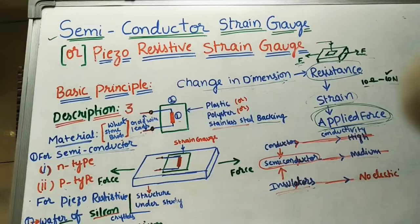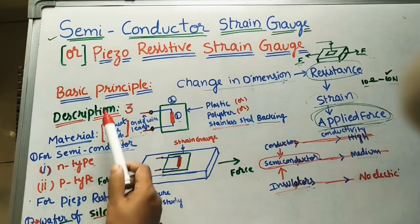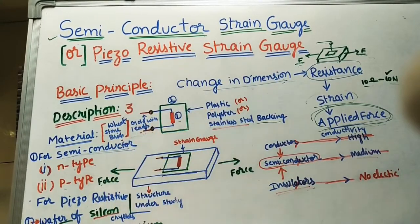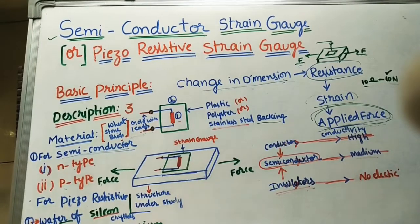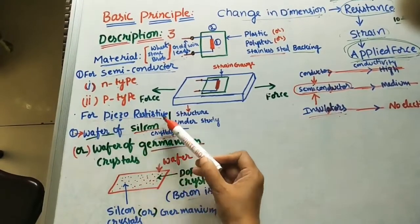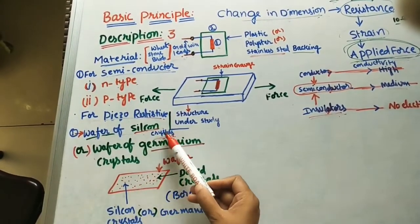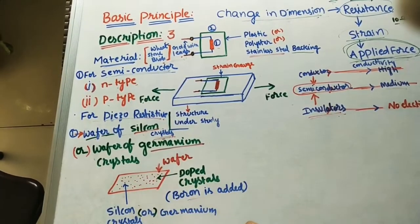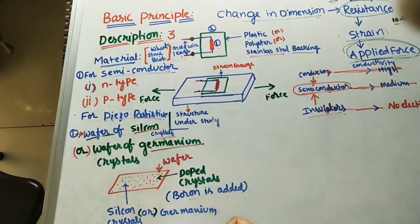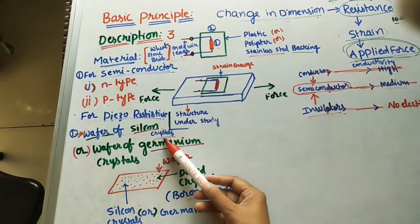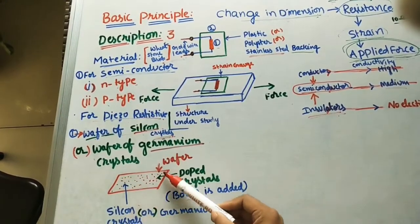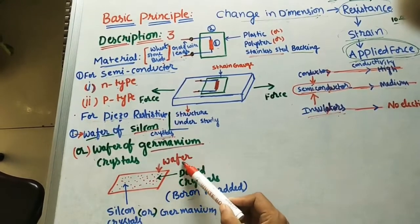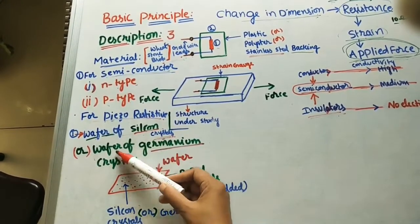If we are using a piezo-resistive strain gauge, instead of semiconductor material we use piezo-electric crystals — taken in wafer form. For the piezo-electric or piezo-resistive material, we use either silicon crystals or germanium crystals, called piezo-electric crystals. We take a rectangular wafer of silicon or germanium.